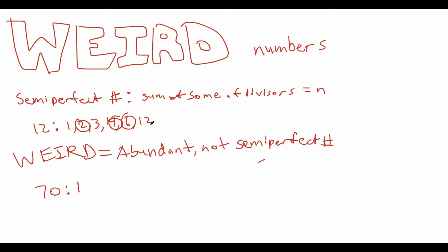This has factors of 1, 2, 5, 7, and then 10, 14, 35, and 70.